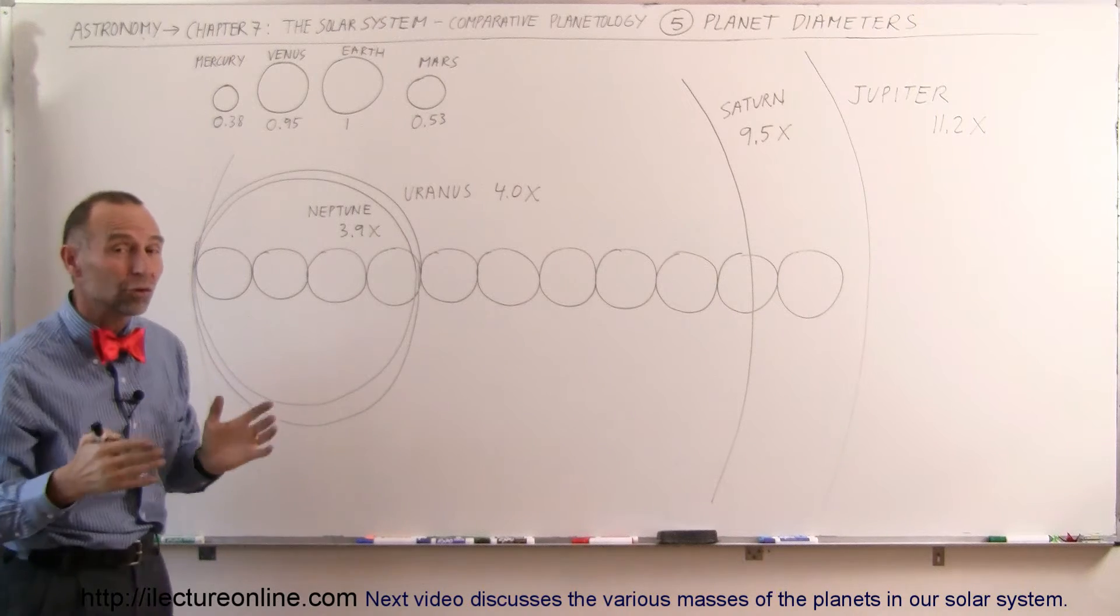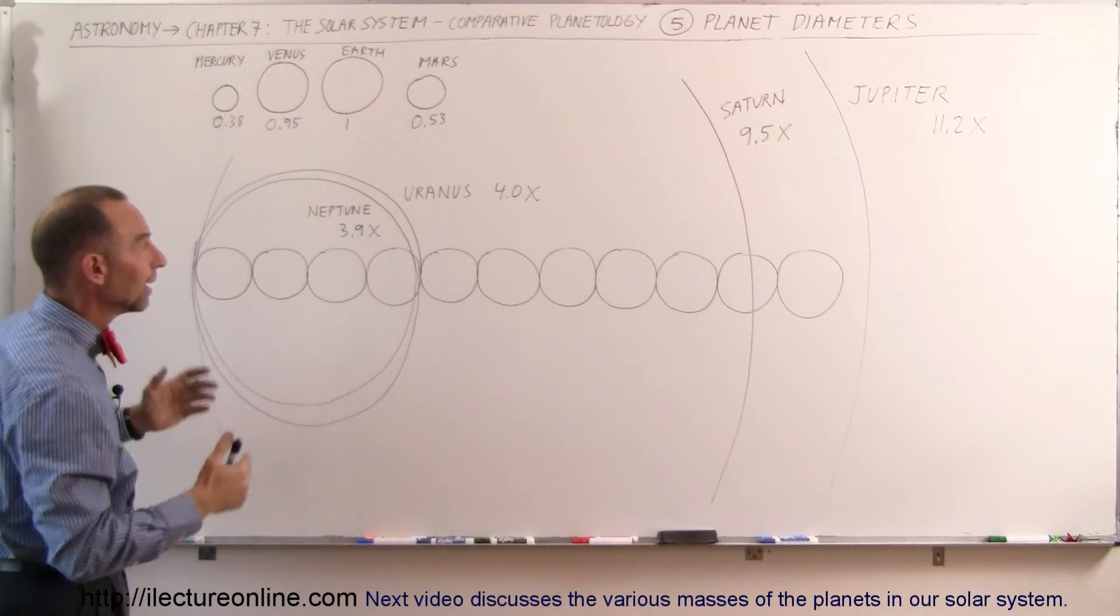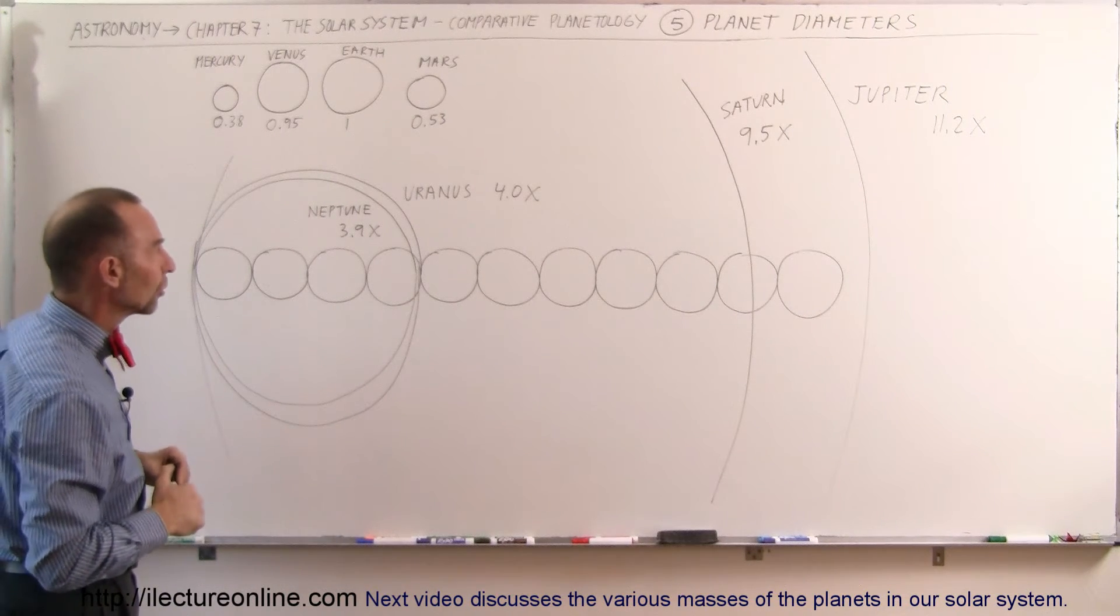But nevertheless, Saturn is also a very big planet, 9.5 times the diameter of the Earth. Now, Uranus and Neptune are very close in size to each other.